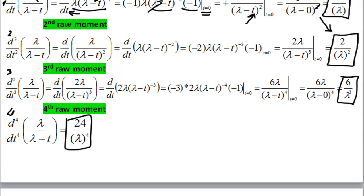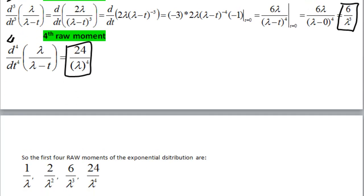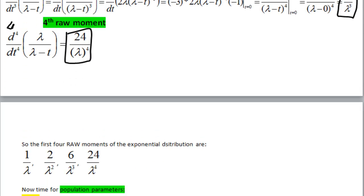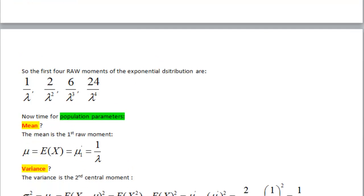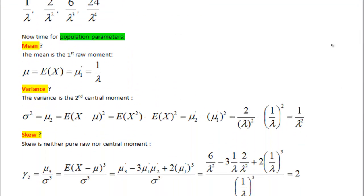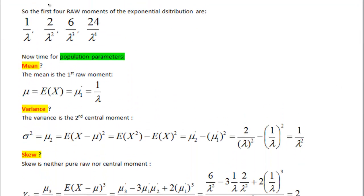So if you followed my previous videos, you would have seen that mean is just the first raw moment. On the previous page we derived the first four moments here: one over lambda, two over lambda squared, three and four. Mean is the first raw moment, so we can take it directly from here.